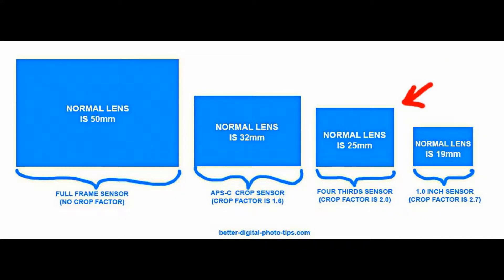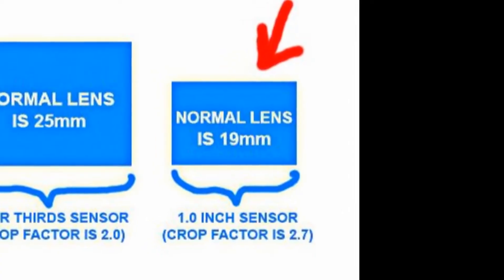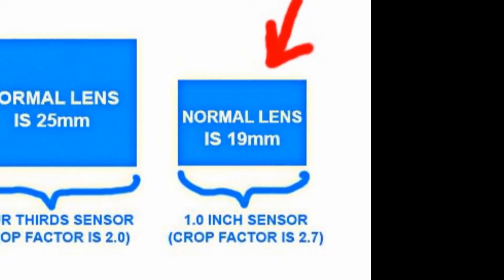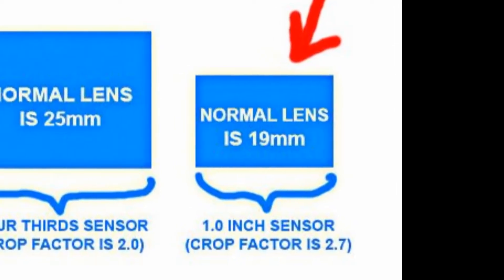Moving along quickly with this illustration, this format uses a four-thirds sensor. Olympus and Panasonic have cameras with this size sensor. A 25 millimeter lens gives you a normal perspective — less than 25 millimeters would be wide and longer than 25 millimeters would be telephoto. And finally, Canon and Nikon both make cameras that have a 1 inch sensor, so the crop factor is 2.7 and a normal lens would be 19 millimeters in focal length.